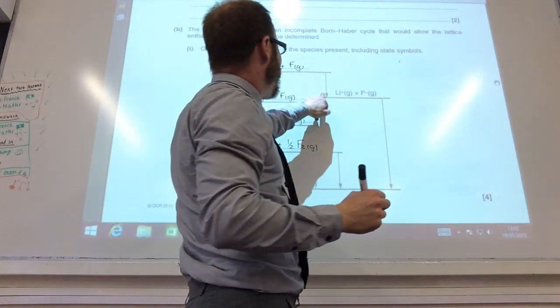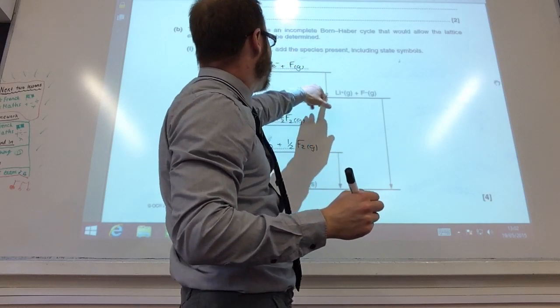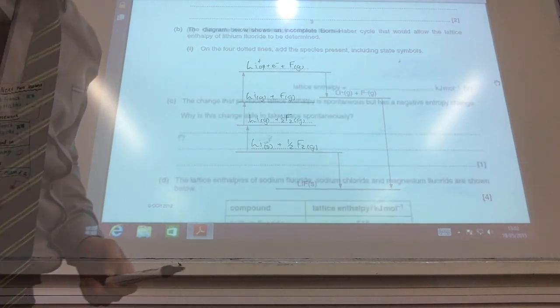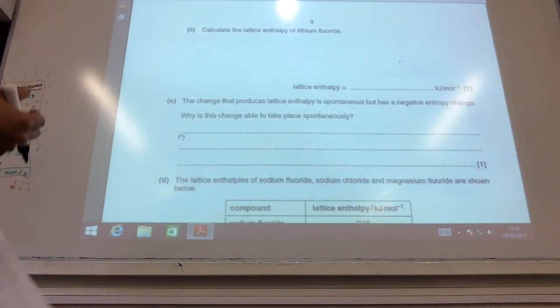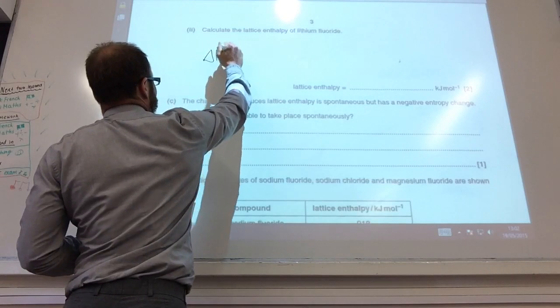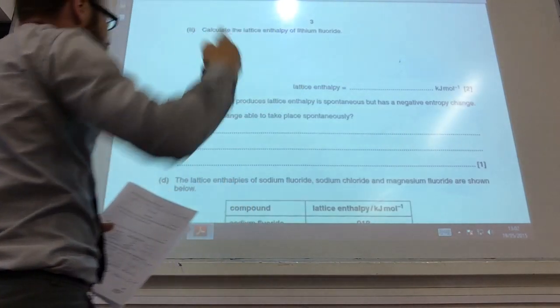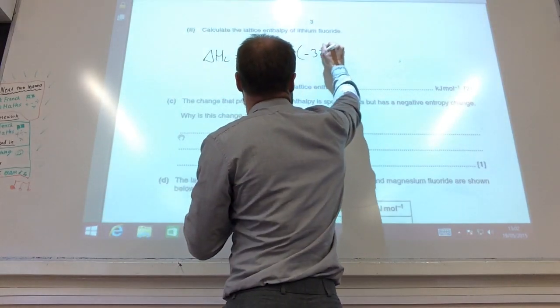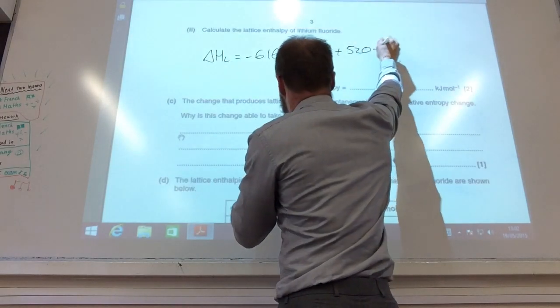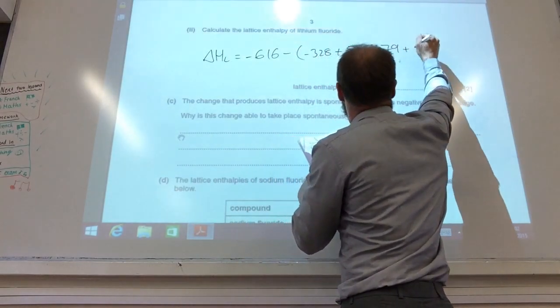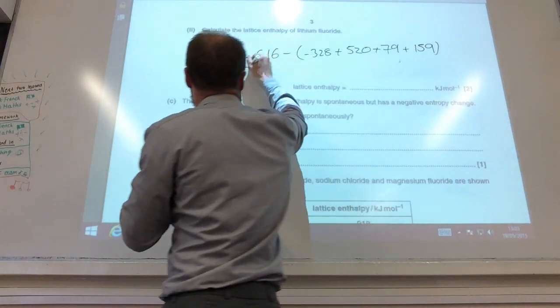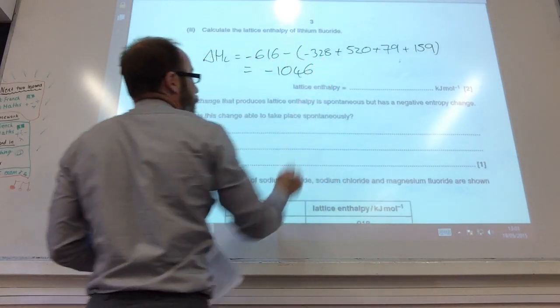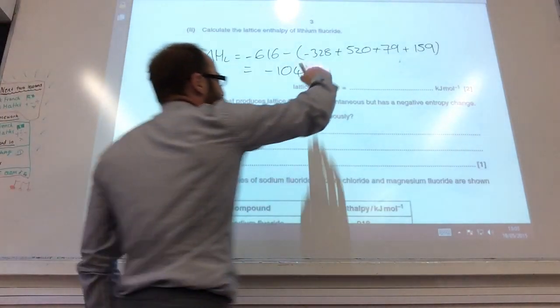The next step, which they completed for me, is going to be the electron affinity of fluorine where that electron pops onto it there. Okay, now let's actually do the calculation. Well it's only counting the lattice enthalpy, so it's not too bad. Remember it's the formation which is -616 minus everything else which is -328 + 520 + 79 + 159 if I can read my writing correctly.